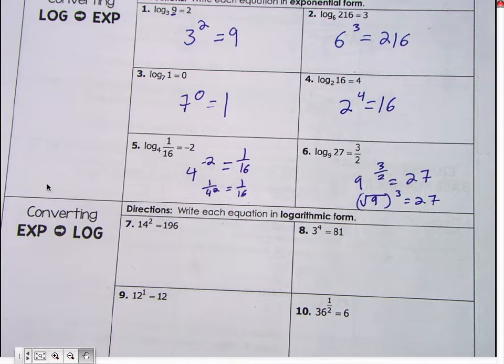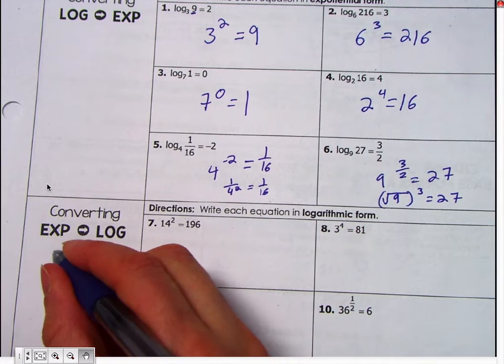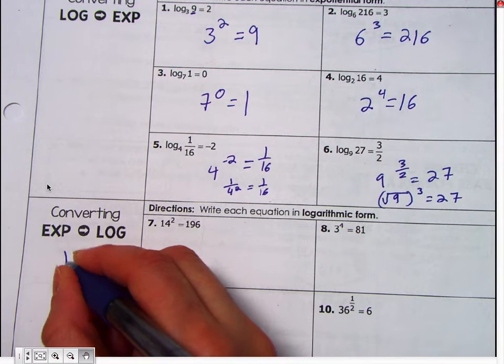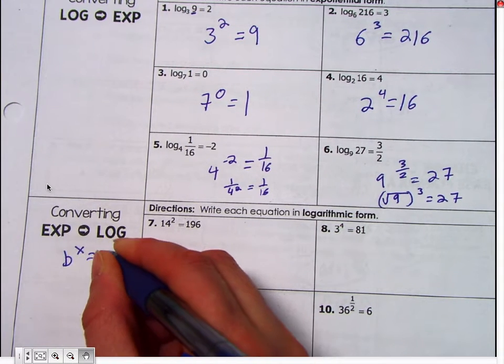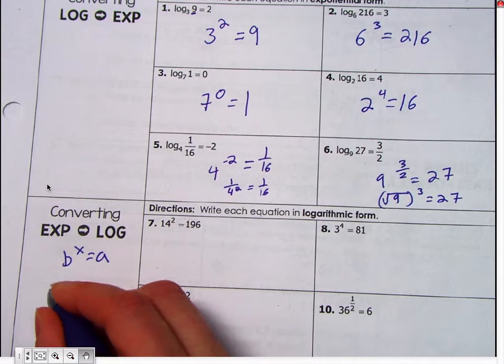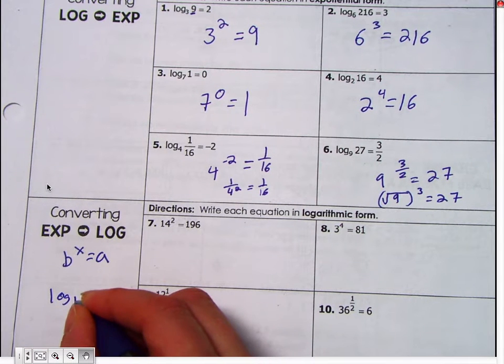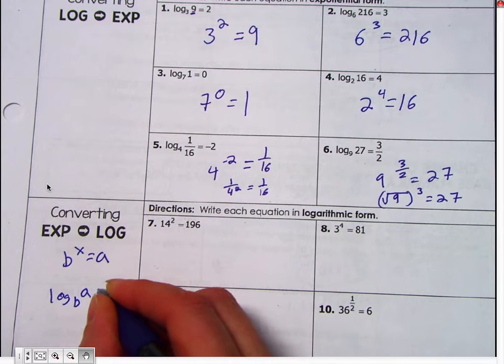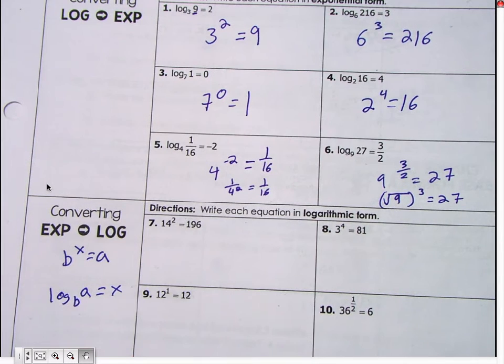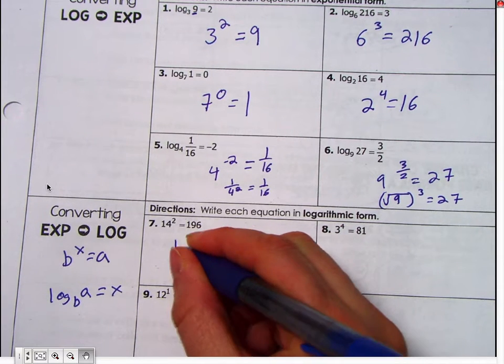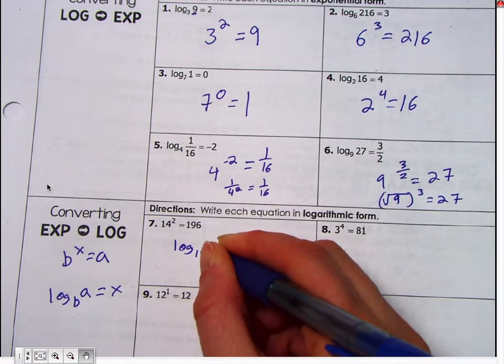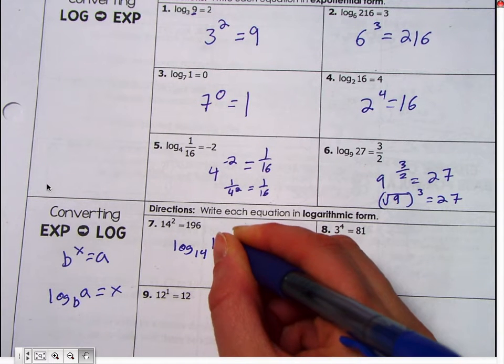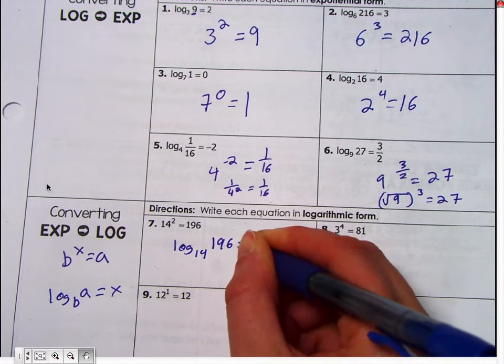Okay. Now we have an exponential and we need to move to a log. So I'm going to remind you what the rules are right here. If I have b to the x equals a, I'm going to move to log base b of a equals x. All right. So I'm going to do the first one and then I'm going to have you guys help me out. So I'm going to say log fourteen of 196 equals two.